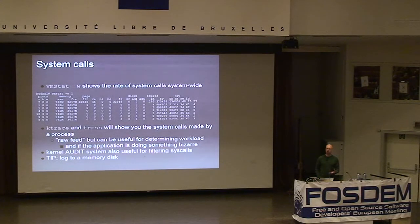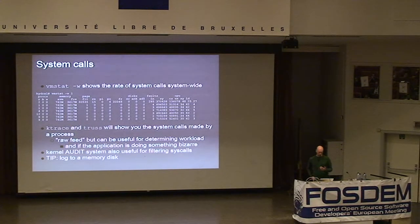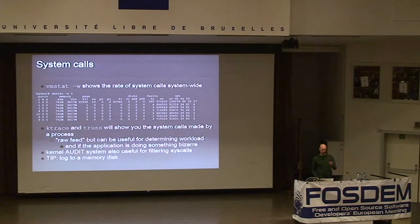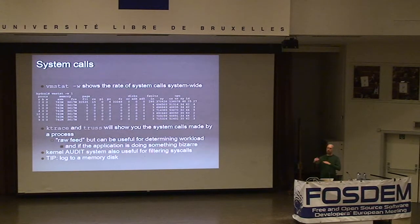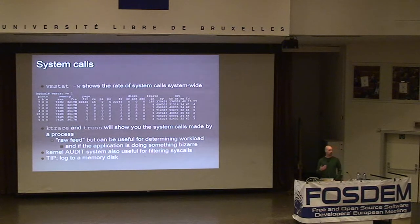There are various tools like ktrace, truss, and strace that let you attach to a process and print a list of every syscall it makes. It's quite a raw feed of data, which can be a lot to post-process or grep, but it tells you exactly what the process is doing every time it enters the kernel. With this magnitude of problems, it will show out very clearly — if you're doing 700,000 syscalls, it's typically a small number of syscalls happening very frequently.